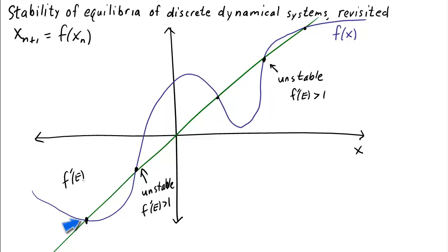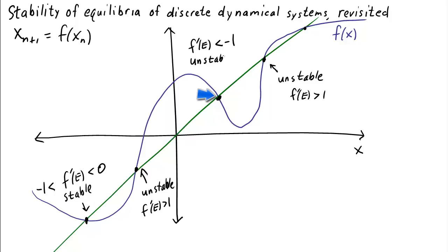At the first equilibrium, the derivative looks negative but pretty shallow, so it's probably greater than negative 1, meaning the equilibrium is stable. At the middle equilibrium, however, the function is pretty steep, so f'(e) is probably less than negative 1, which means it must be unstable. At the top equilibrium, the slope is still positive but small, so f'(e) is likely between 0 and 1, meaning it's stable. So we have two stable equilibria and three unstable equilibria — you can try cobwebbing to verify. The nice thing about this approach is that we can determine stability just by looking at the graph of the updating function.